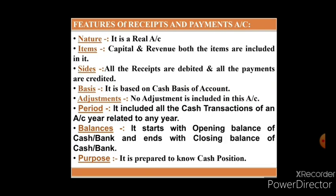Features of the receipts and payment account: Nature — it is a real account. Items — it includes capital as well as revenue both types of items. Sides — it has two sides: LHS consists of receipts and RHS consists of payments. Basis — it is prepared on cash basis of accounting. We studied last year in 11th class that there are two bases of accounting: cash basis and accrual basis. So this receipts and payment account is prepared on the basis of cash. Adjustment — there are no adjustments included in this particular account.